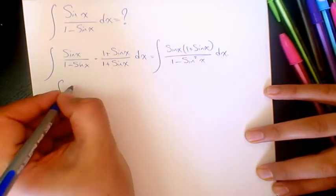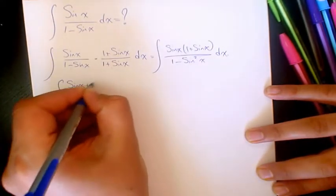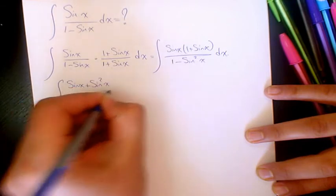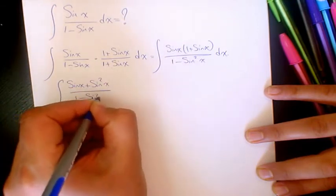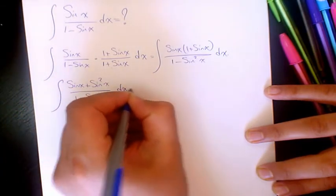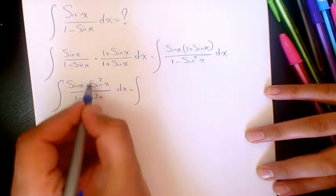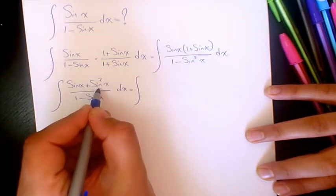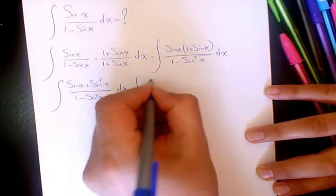Then when you distribute it, it's going to be sine x plus sine squared x divided by 1 minus sine squared x dx. Then instead of sine squared x, I can write 1 minus cosine squared x.